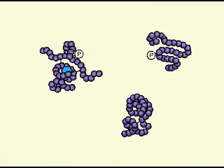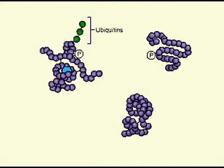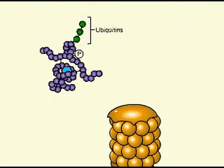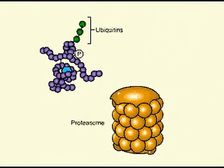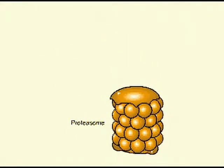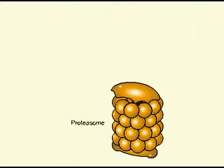A cell can get rid of abnormal or damaged proteins and limit the lifetime of functional proteins by means of selective degradation. The cell marks the protein for destruction by attaching small ubiquitin proteins. Giant protein complexes called proteasomes recognize ubiquitin and break down the tagged protein.